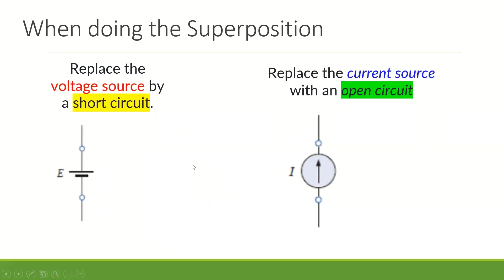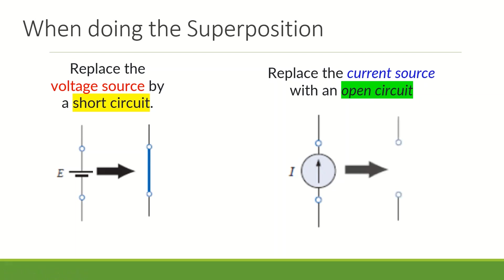When doing superposition, we replace the voltage source by a short circuit, while the current source we replace with an open circuit. So for the voltage source, we replace it by a short circuit; on the other hand, we replace the current source with an open circuit.